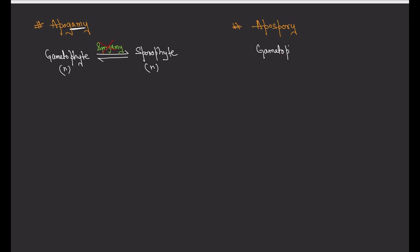The closely related term is apospory. Normally, the sporophyte undergoes meiosis to form a haploid gametophyte. But in apospory, the sporophyte is directly converted into gametophyte without meiosis, so the gametophyte also remains diploid. Generally gametophyte is haploid, but here a diploid gametophyte is forming. Both the sporophyte and the resulting gametophyte carry the diploid condition.